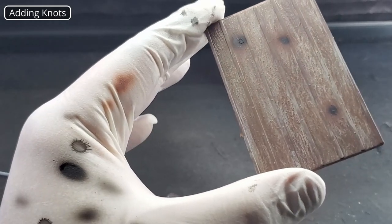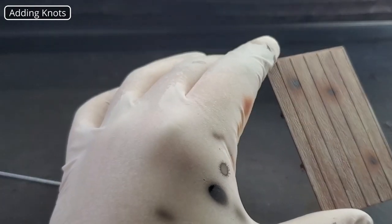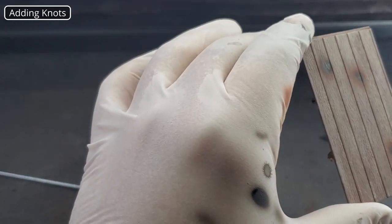All right, so that's the basis for our knots. We're going to go ahead and switch back to the 0.35 needle and nozzle setup and we're going to finish this up with our clear red and clear yellow steps.